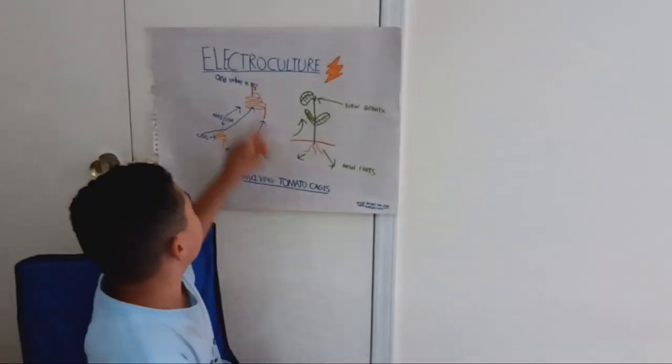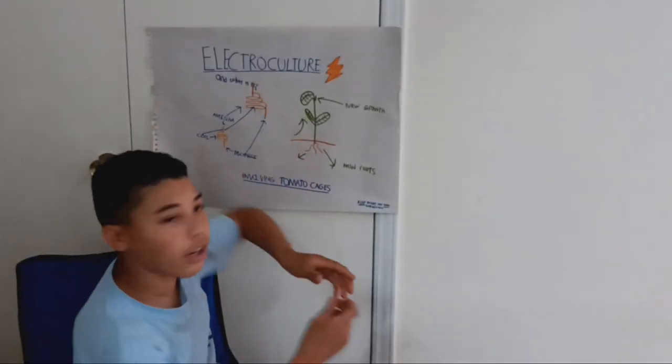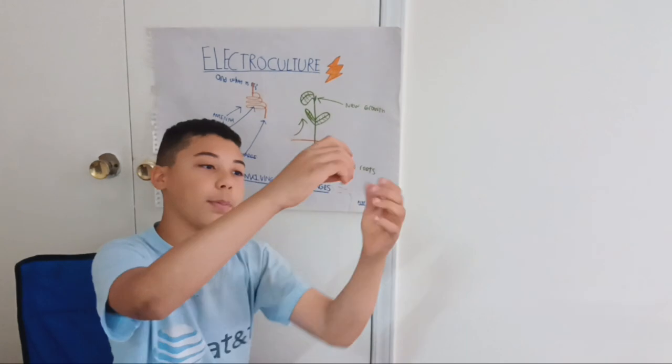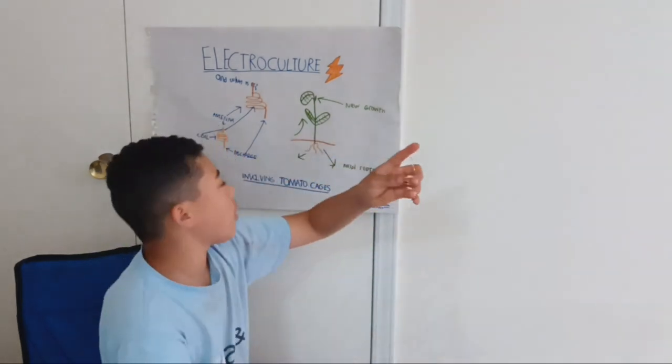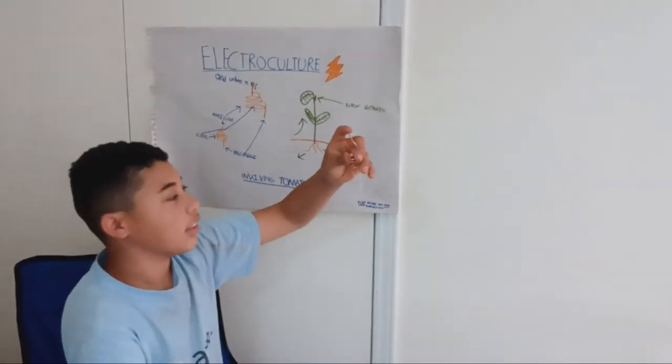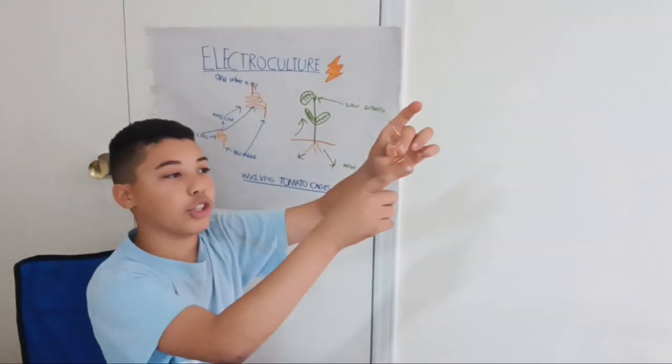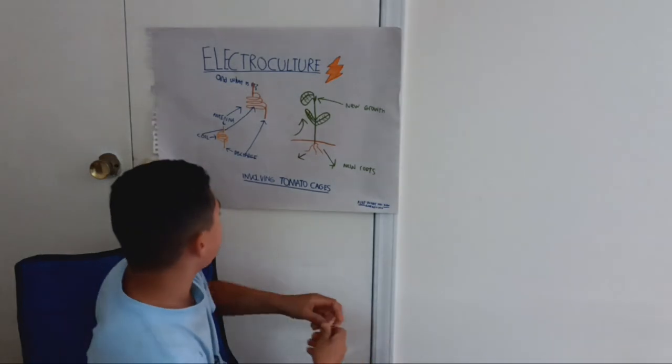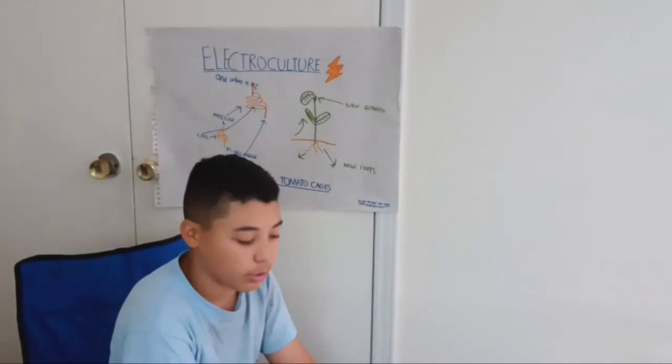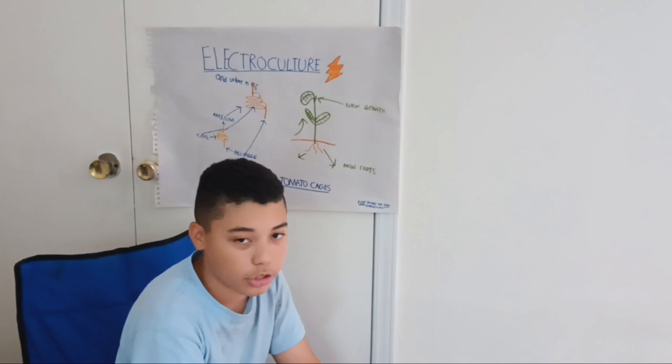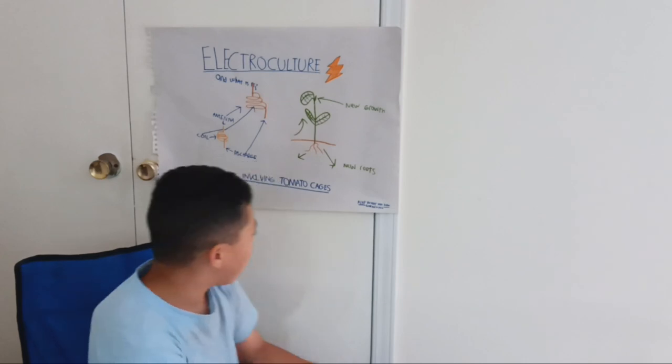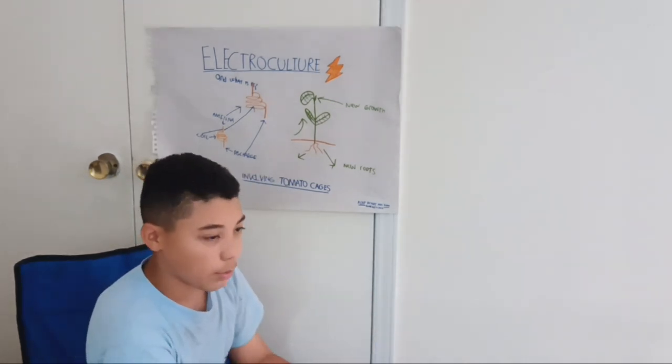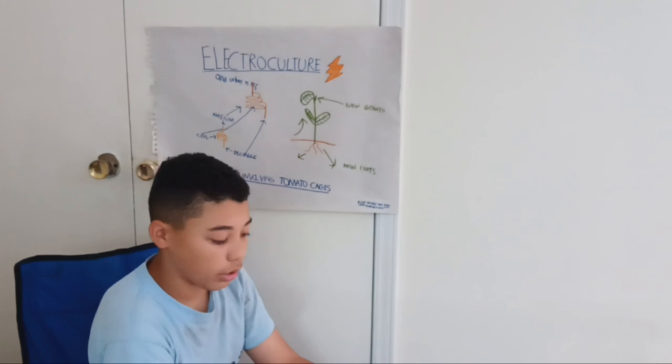So electroculture - this part up here is the antenna and this is the discharge to the roots. You can wire them to a tomato cage. These coils have to be copper - anything else, they're not going to work. Trust me, Deep South Homestead says if it's anything else it won't work.